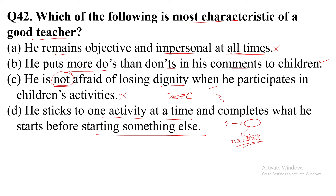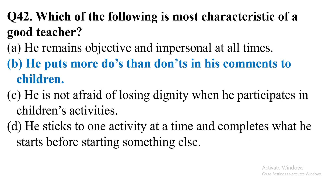Sometimes what happens is that a teacher has started something and without completing it he has to start something else in order to explain certain things. Sometimes in an ongoing class he also has to follow the demand of the class. So doing only one activity at a time is not always correct. Therefore the correct answer of this question is Option B.